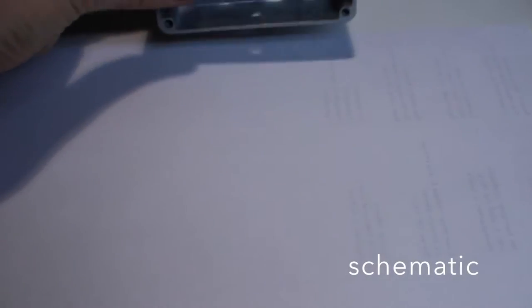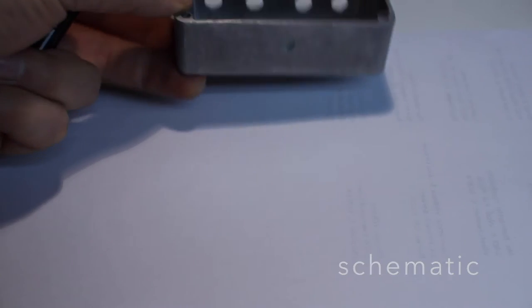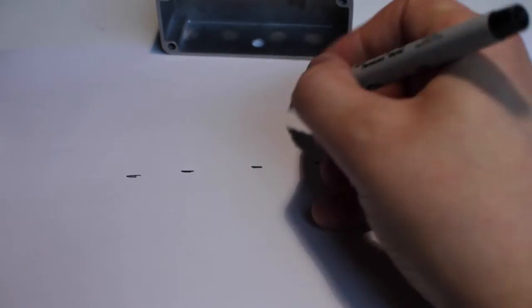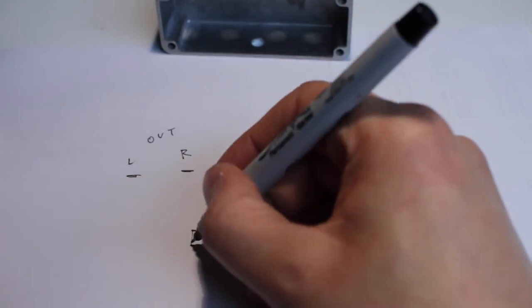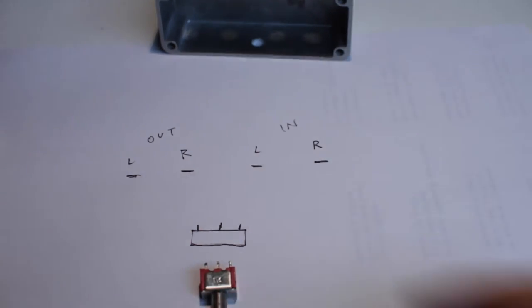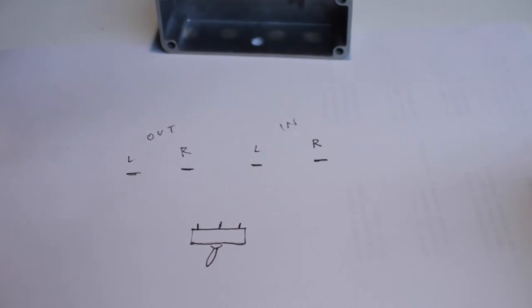You really should start a project with a schematic, but this box is so simple, I just waited until it was time to wire it to figure it out. So, we've got four jacks, left and right in, and left and right out, and a single pole double throw switch, which has three terminals. All I really needed is a single pole single throw switch with two terminals, but I have a bunch of these in my stock.